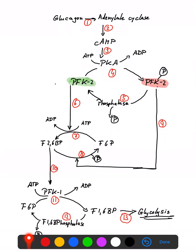It all starts with the peptide hormone glucagon, which is secreted by the alpha cells in the Langerhans islet cells of the pancreas. This is a peptide hormone which binds to a cell receptor — specifically a G-protein coupled receptor.